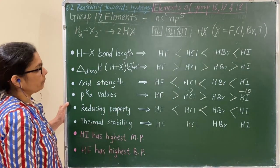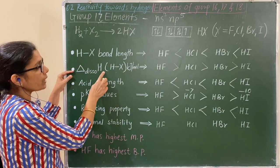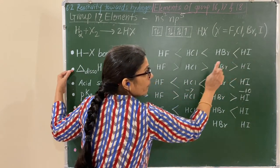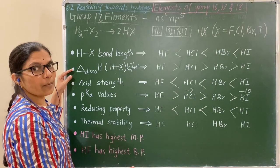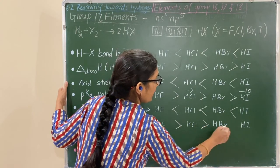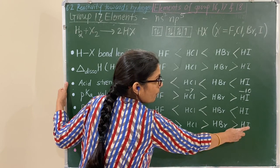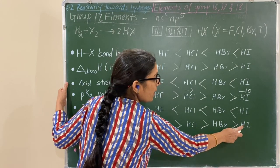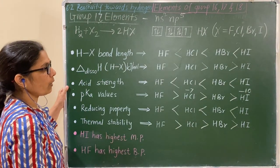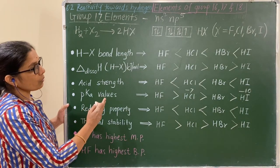Thermal stability: bond dissociation enthalpy decreases down the group, so the bond breaks easily, meaning the hydride is less stable. Therefore, thermal stability decreases down the group, and HF is the most thermally stable among the hydrogen halides.